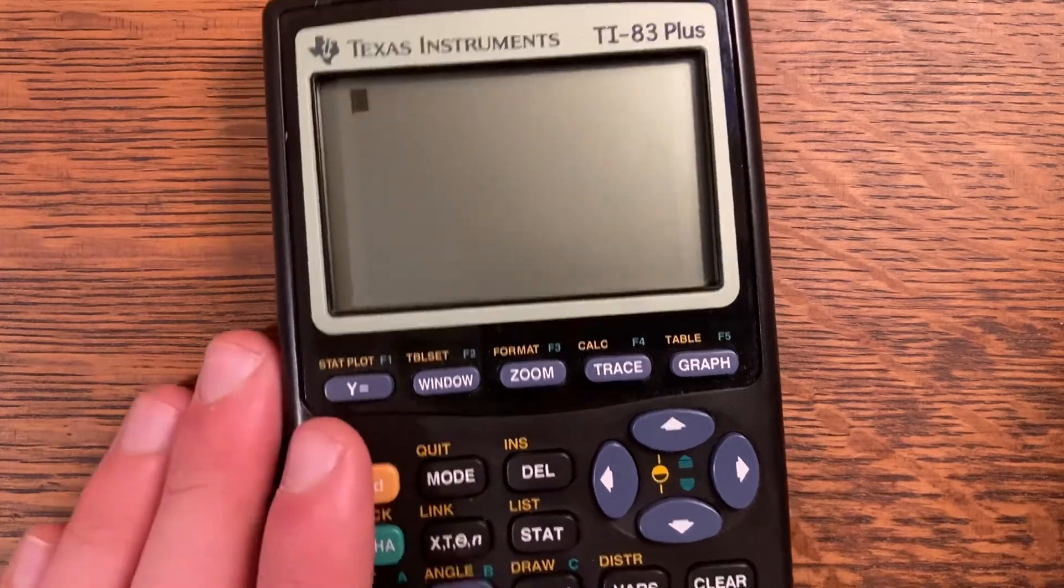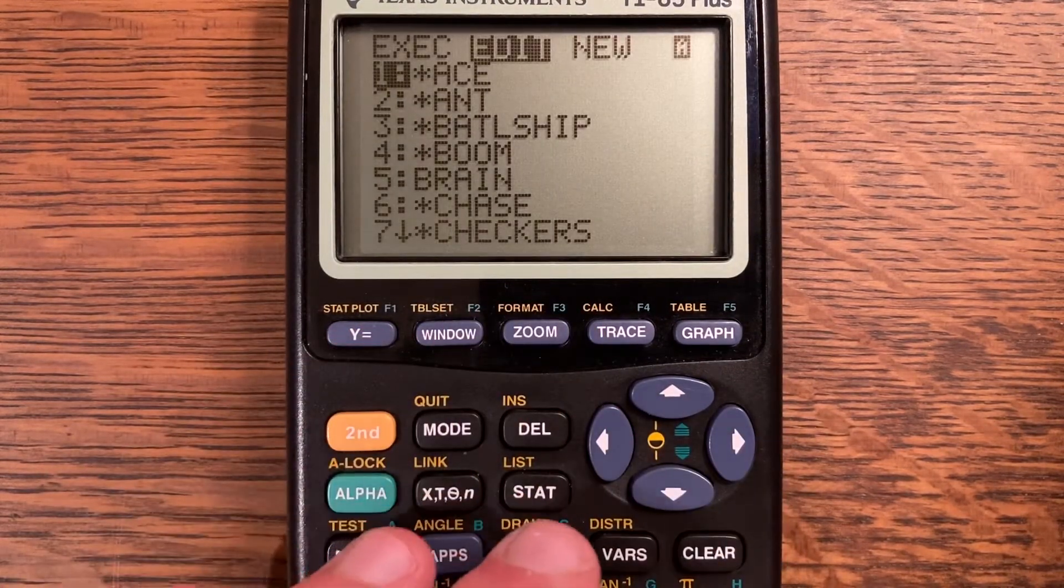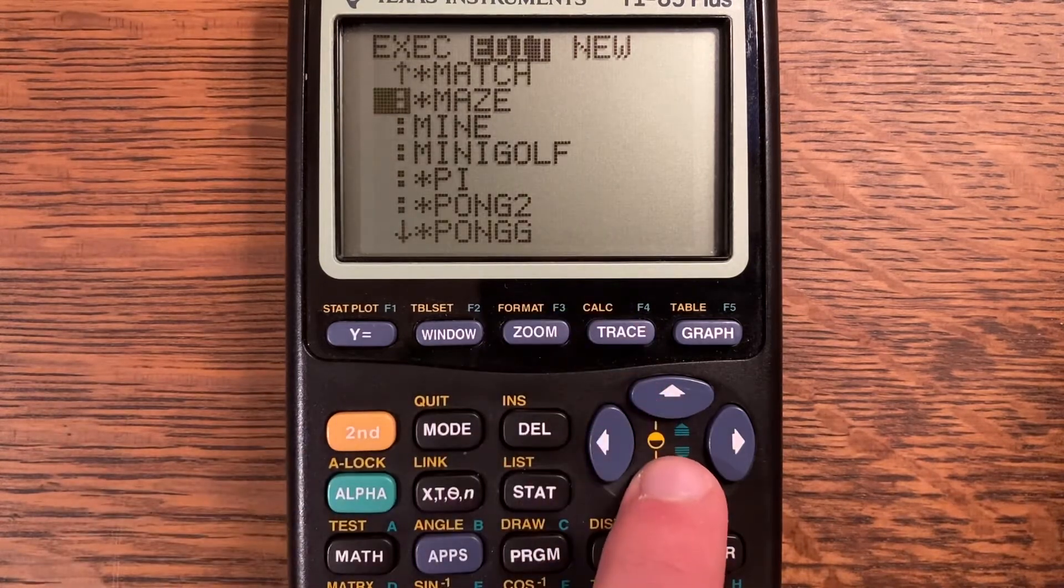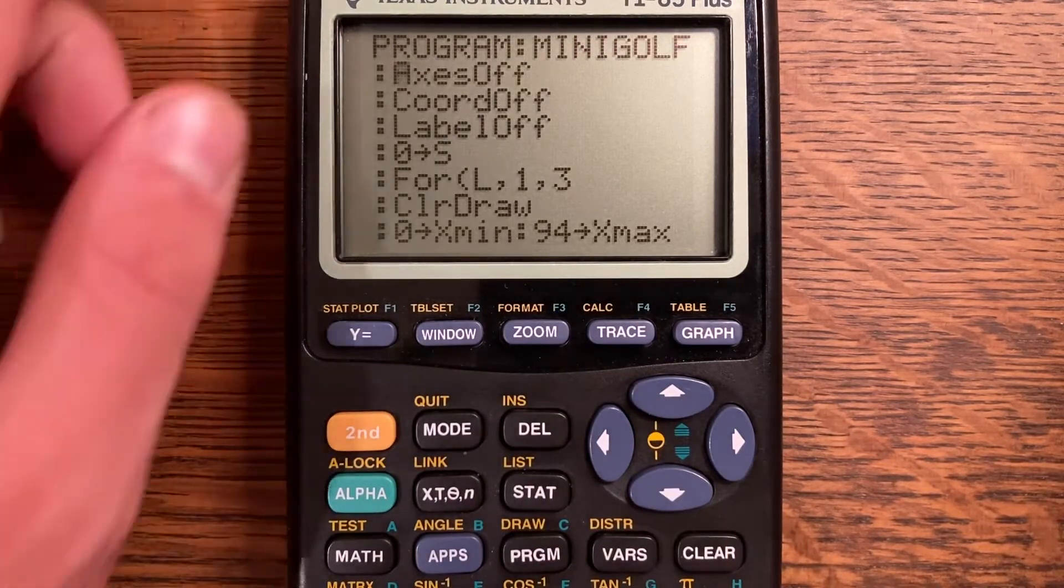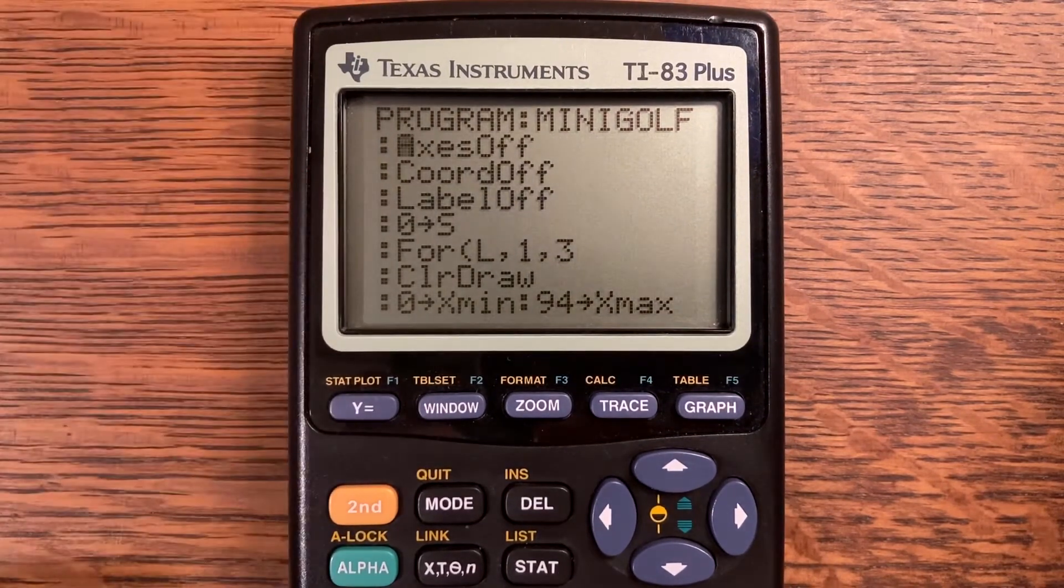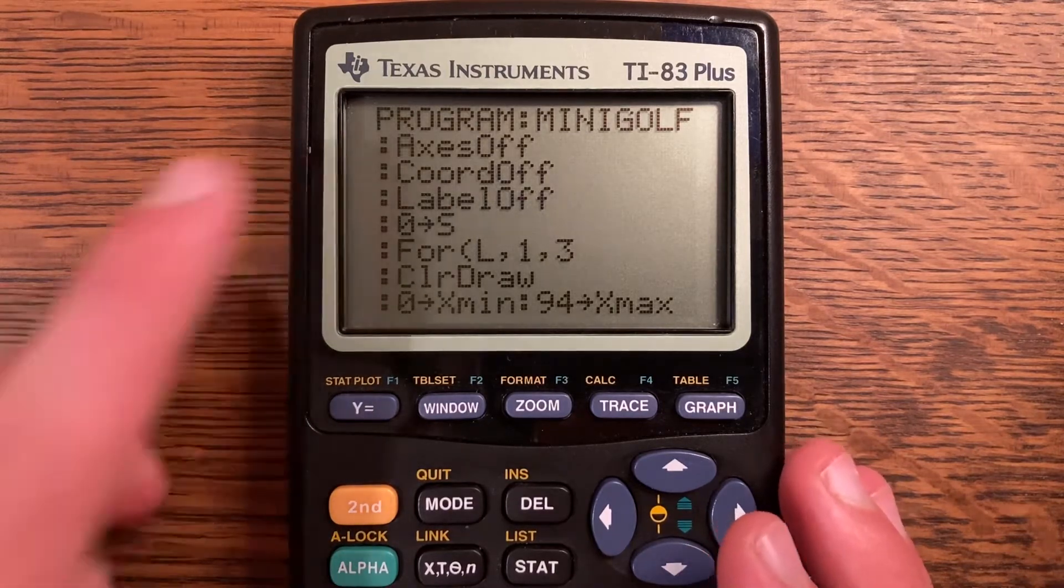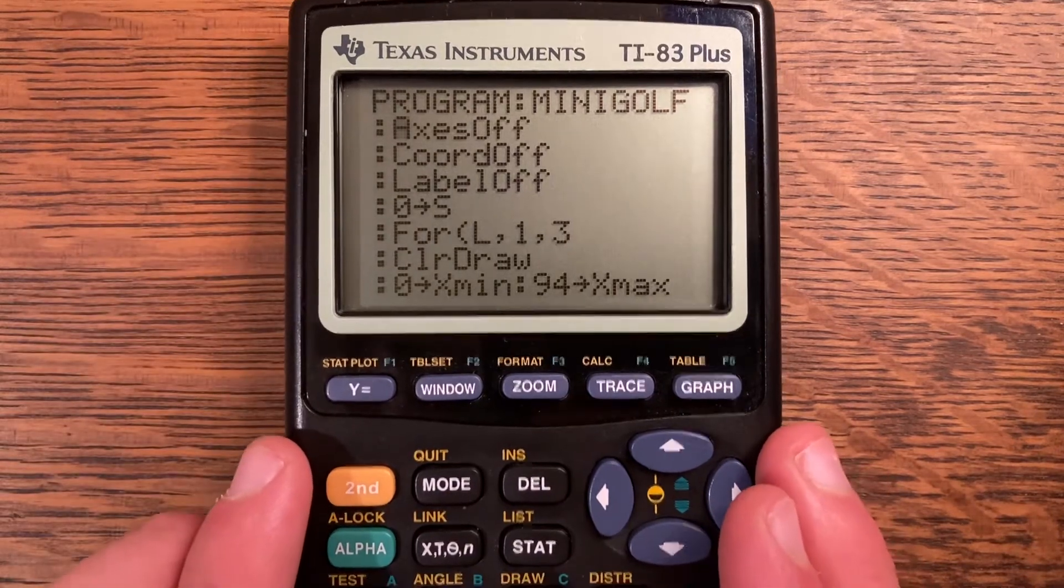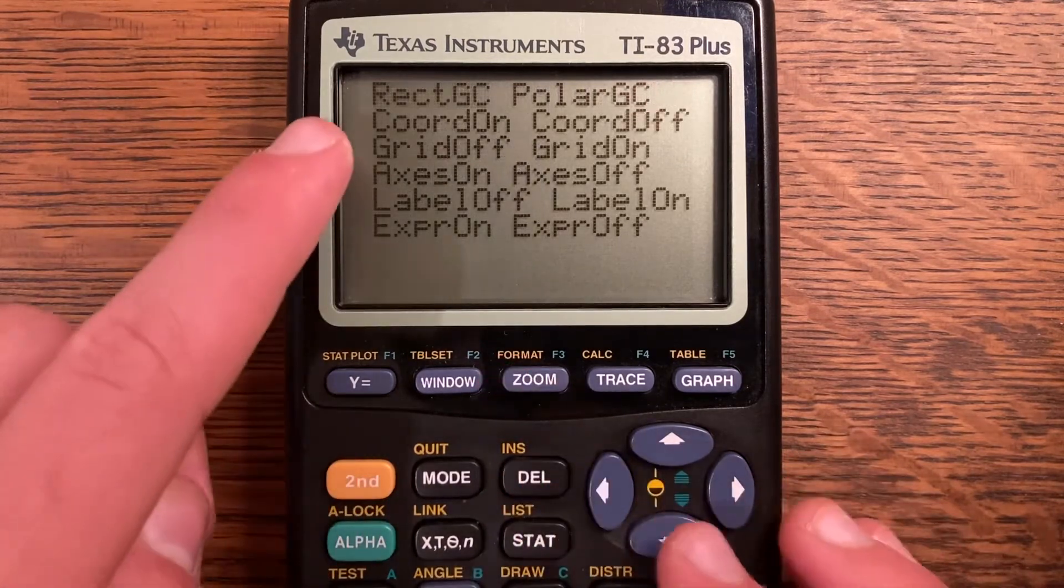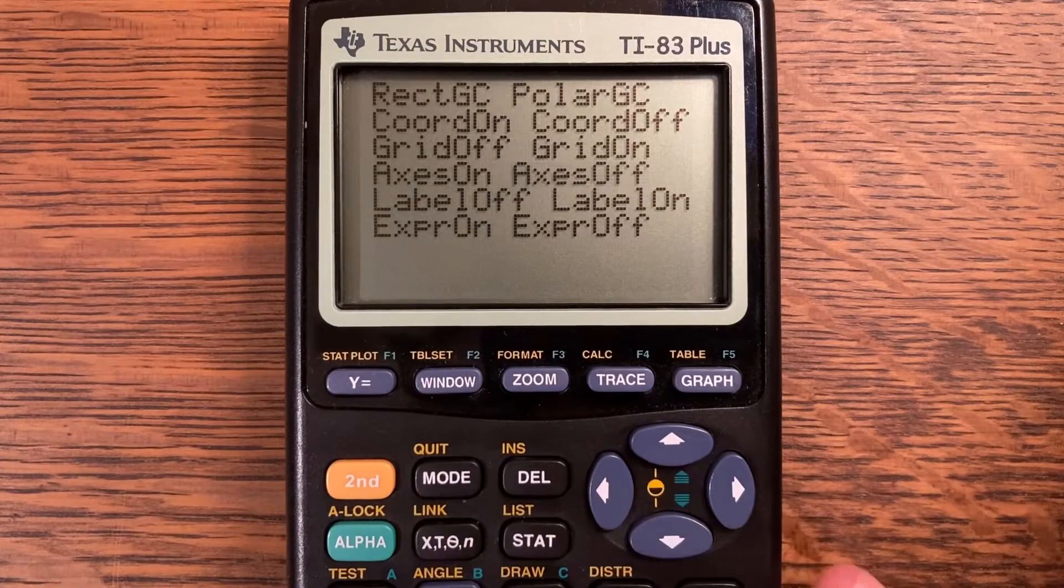I like to keep mine around six because it's just good for the battery and you can see it pretty well. So I'm going to go ahead and click program. I'm going to edit mini golf and you will create a new program when you go and make it. You can call it whatever you want. It does not necessarily have to be mini golf. Okay, axes off, coordinates off, and label off.